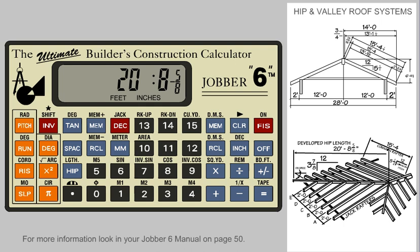At this point, we can now solve the jack rafters. We can easily solve for all the jack rafter lengths. But first, we need to enter the rafter spacing. Let's use a 2-foot spacing since this probably is the most common. We set this spacing by pressing the space key. Now we need to activate the jack function by pressing the invert key and the jack key.